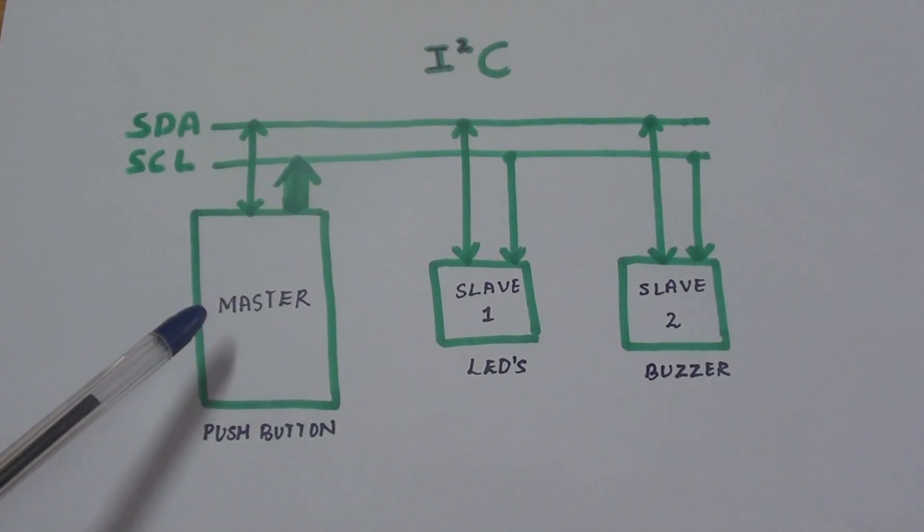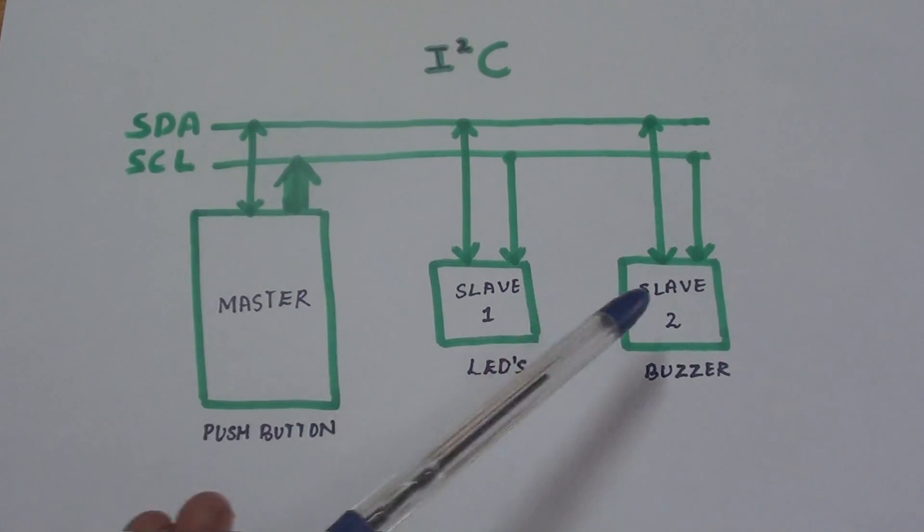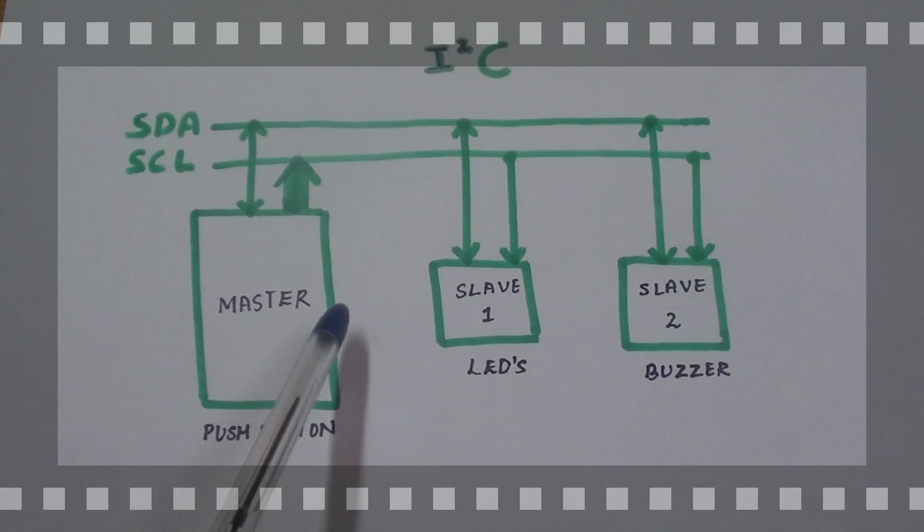One device on the I2C bus is considered as master. Its job is to coordinate the transfer of information between the other two slaves that are attached to it.